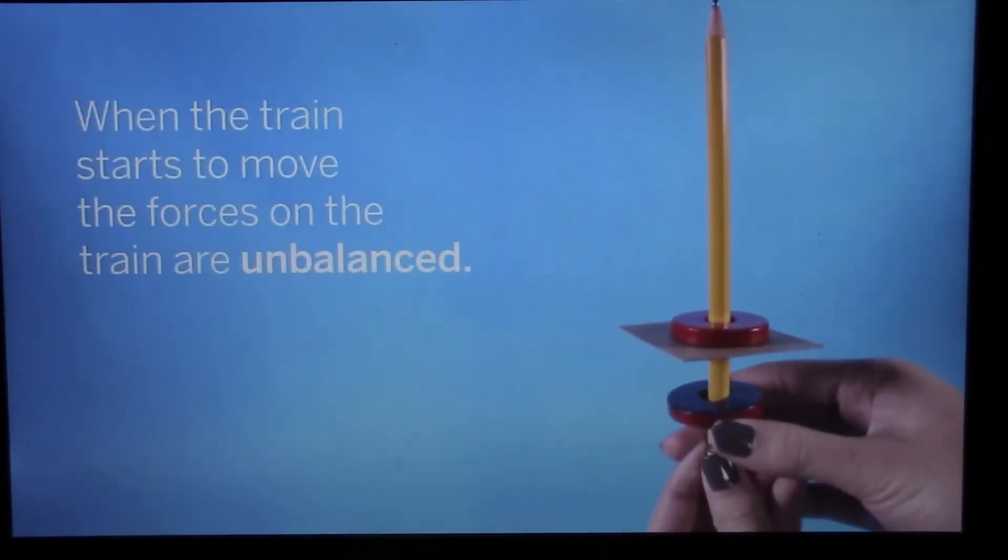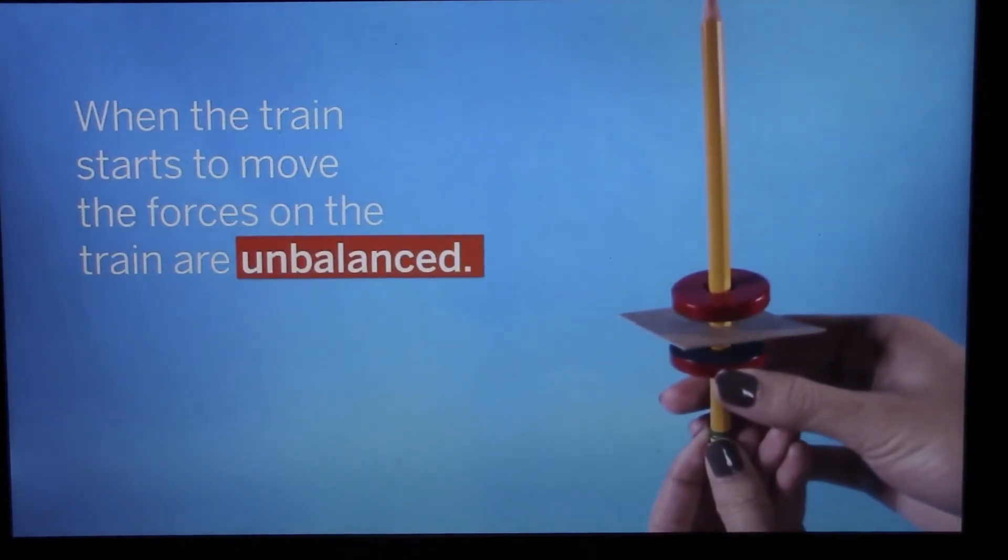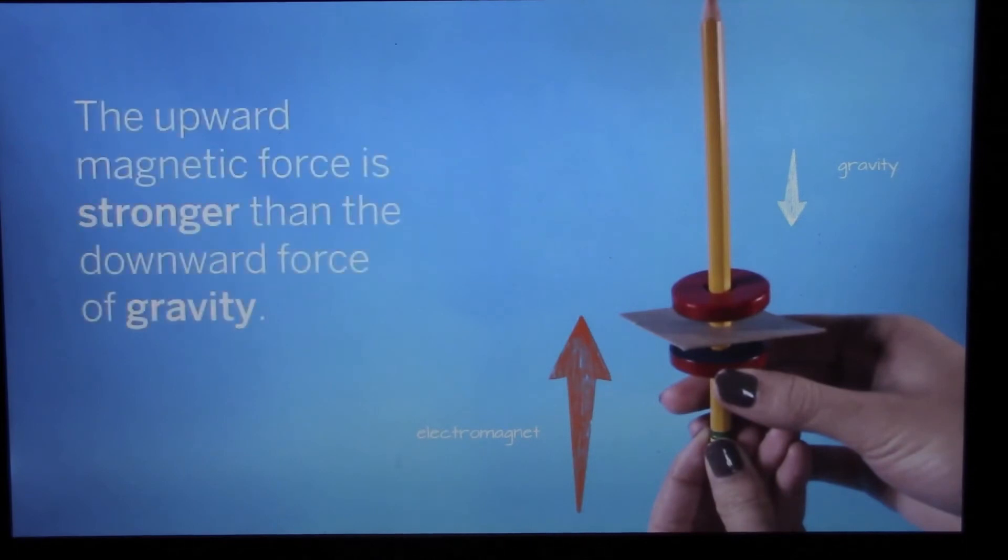When the train starts to move, the forces on the train are unbalanced. The upward magnetic force was stronger than the downward force of gravity.